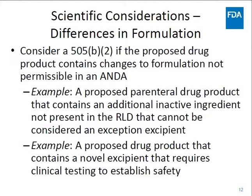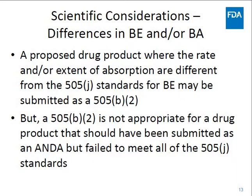For example, a proposed parenteral drug product that contains an additional inactive ingredient not present in the RLD that cannot be considered an exception excipient, or a proposed drug product that contains a novel excipient — meaning an excipient that has not been used in an FDA-approved drug product previously — the safety of which cannot be established without clinical testing. Regarding bioequivalence, an ANDA contains sufficient information to demonstrate bioequivalence to the RLD. An application for a drug product where the rate and/or extent of absorption are different from the 505J standards for bioequivalence may be submitted as a B2. A B2 NDA is not appropriate for a drug product that should have been submitted under the ANDA pathway but failed to meet all 505J requirements.